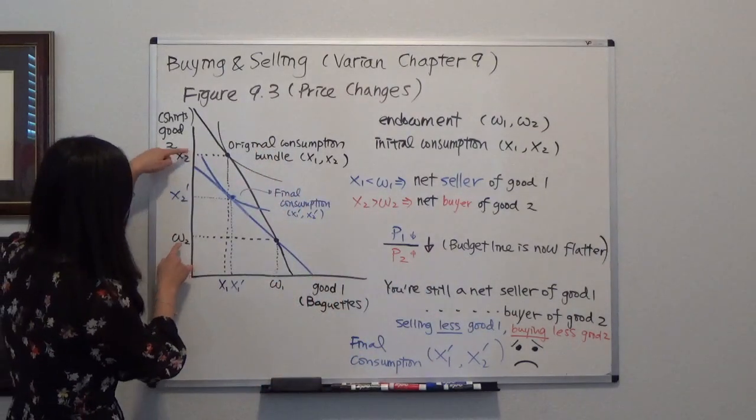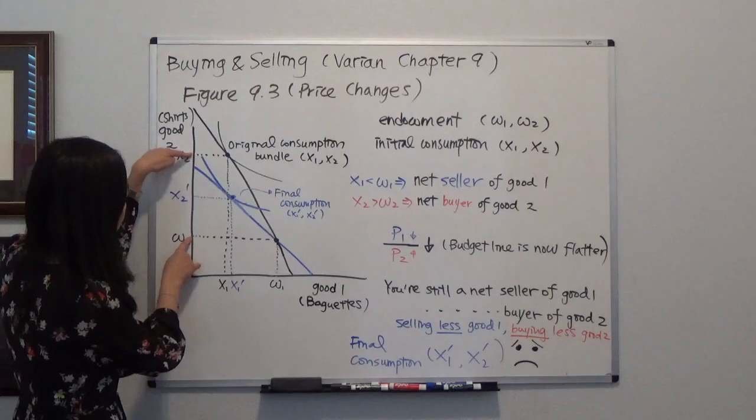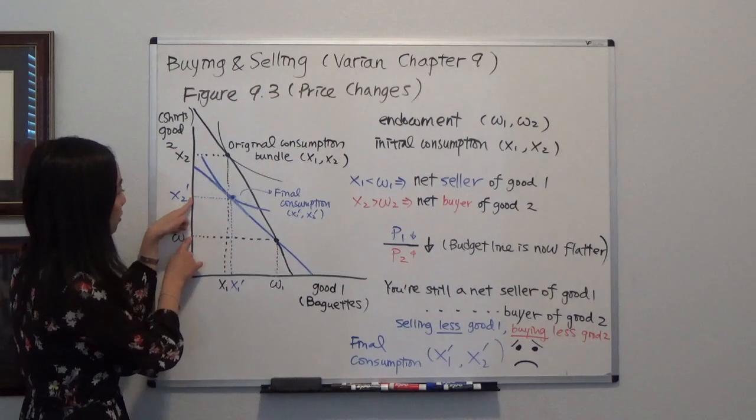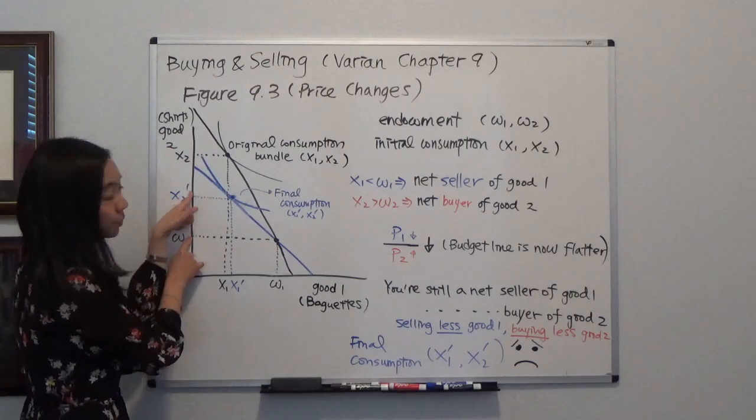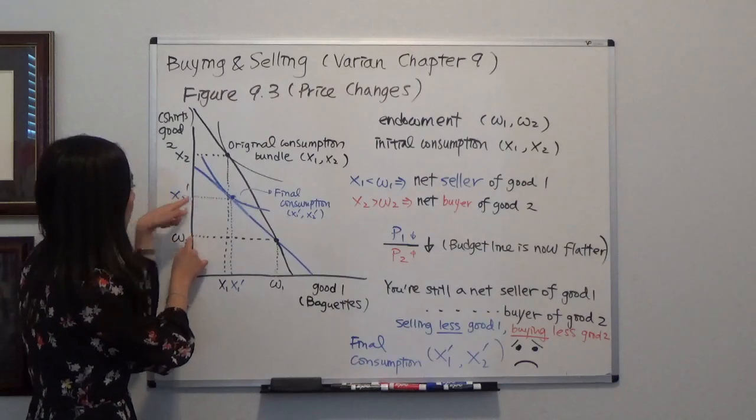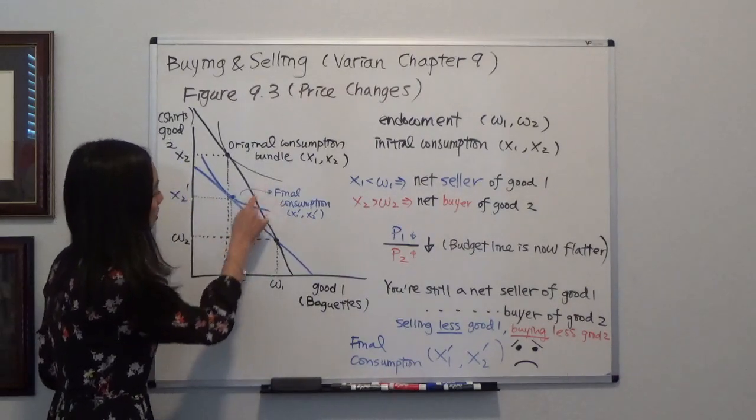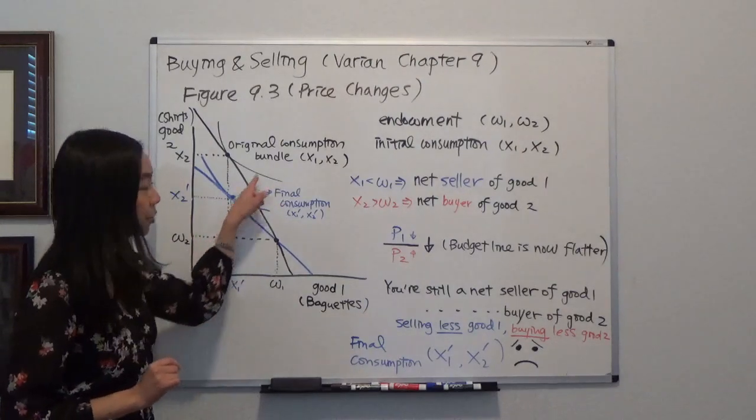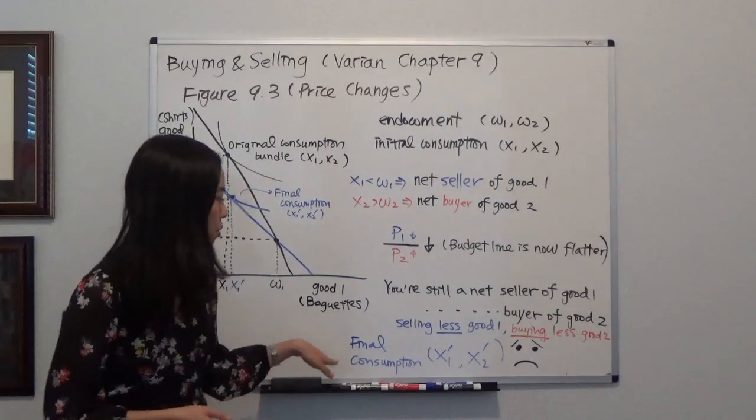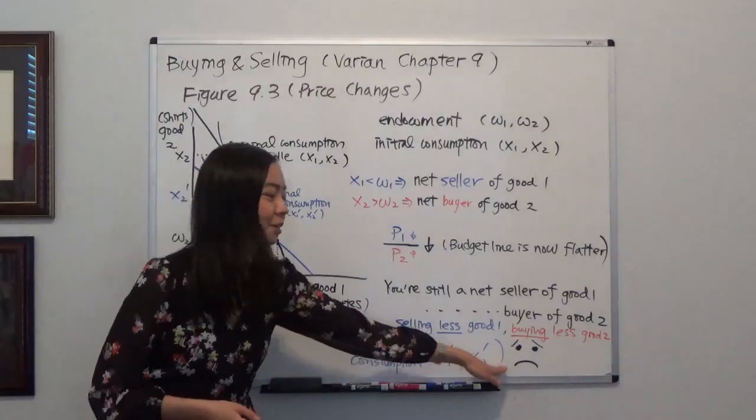Instead of your final consumption x2, now your final consumption of good two is x2'. So you're consuming less good two than before. And notice that your utility is lower than before. You are not as happy as before.